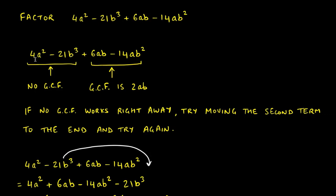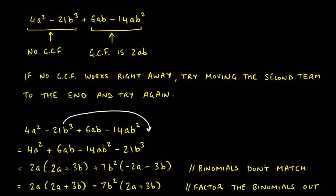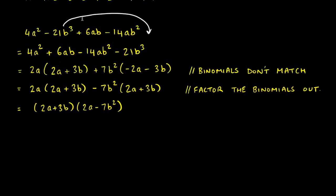For the first group (4a² - 21b³), there is no GCF: no number divides both 4 and 21, and neither variable is shared between the two terms, so we leave it as is. For the second group (6ab - 14ab²), the GCF is 2ab, but if we factor that out, the resulting binomial won't match the first group. Here's another technique to try: rearrange the terms by moving the -21b³ all the way to the end of the expression — this is legal and often helps.